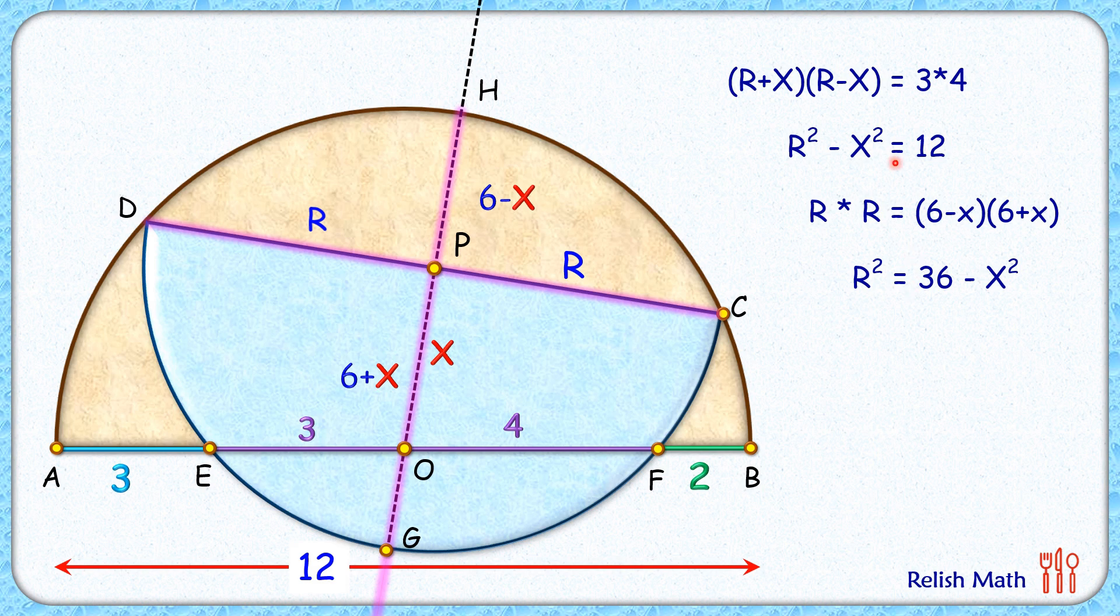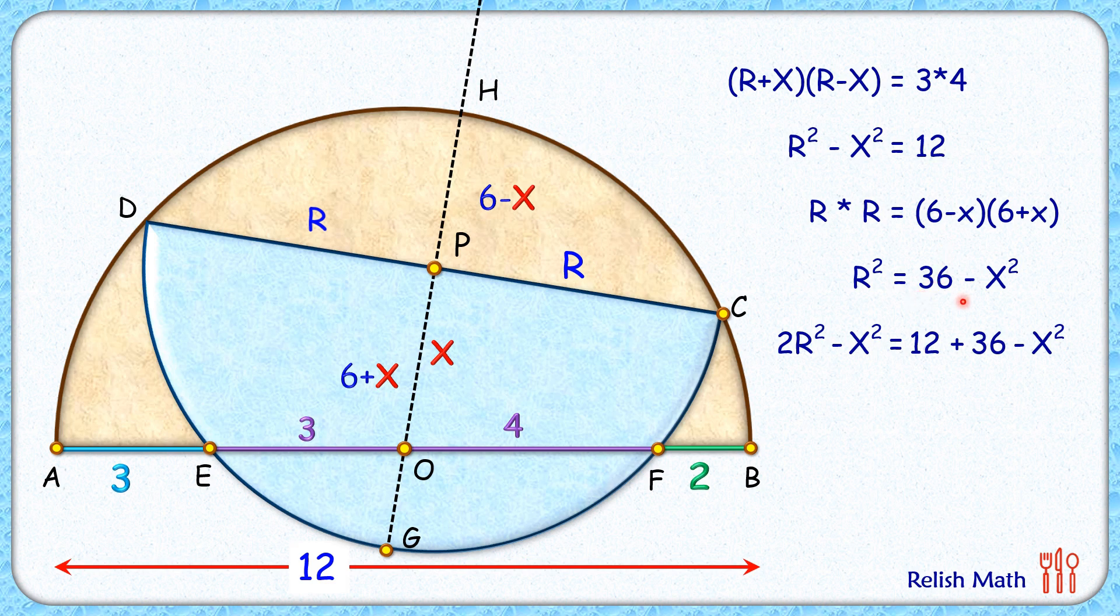So R times R is 6 minus X times 6 plus X, or R squared is 36 minus X squared. Let's add these two equations. LHS will be R squared minus X squared plus R squared, that's 2R squared minus X squared. RHS will be 12 plus 36 minus X squared. Both sides X squared gets cancelled. So we get R squared is 24 or R is 2 root 6 cm and that's our answer.